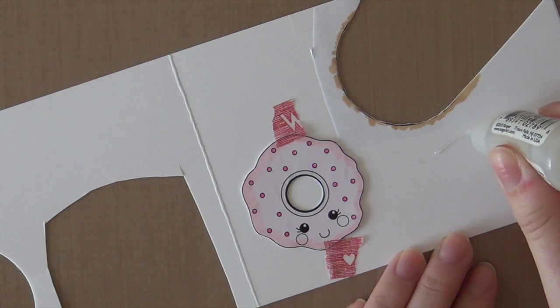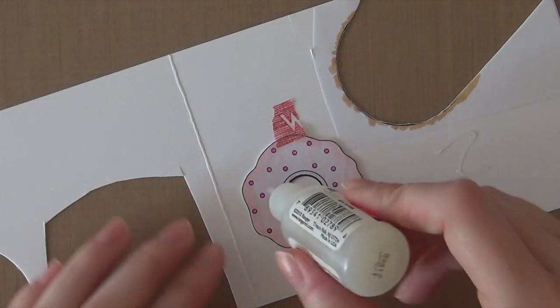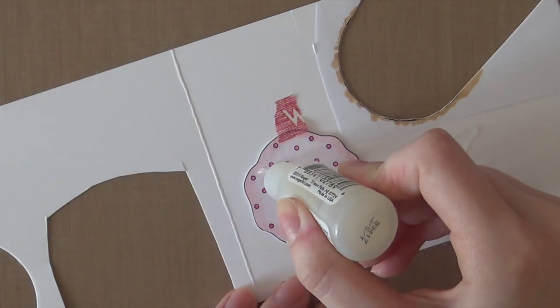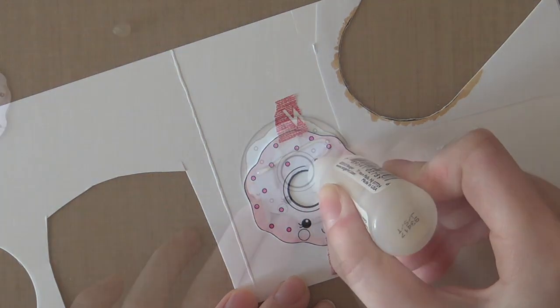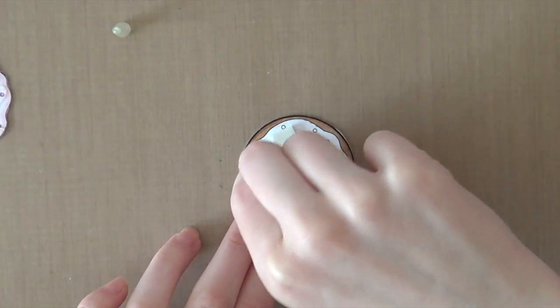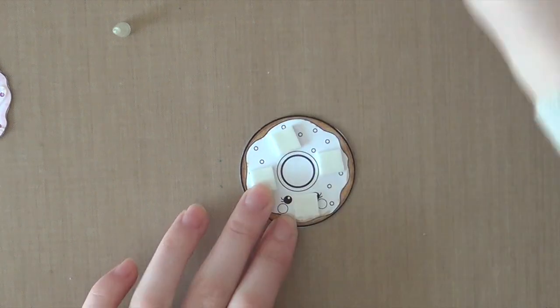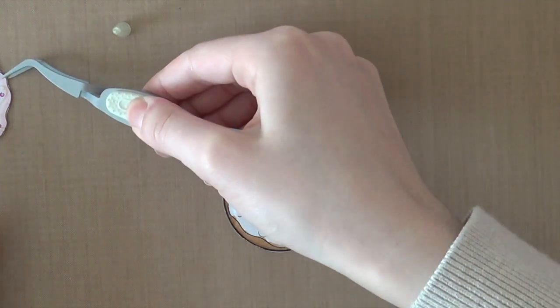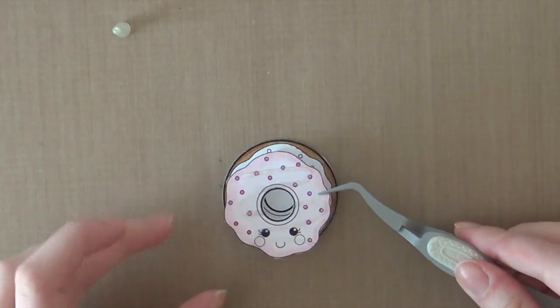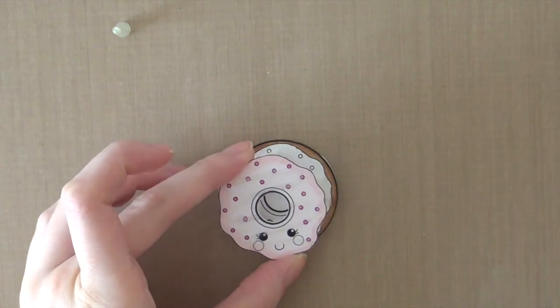I decided to add some extra icing to this donut using glossy accents. I just taped down that donut on a piece of scrap paper using washi tape to do that. And then I'm going to piece together the donut using some foam adhesive and my EK Success tweezers.